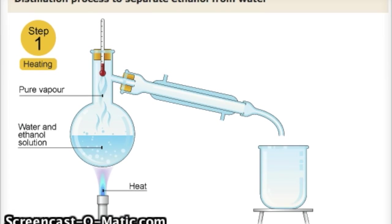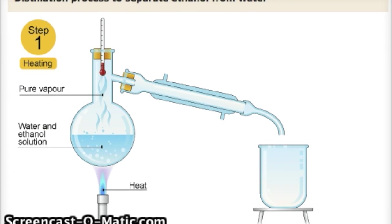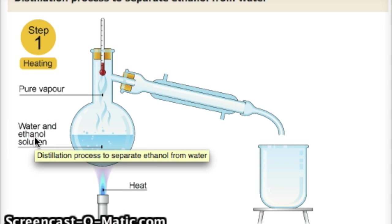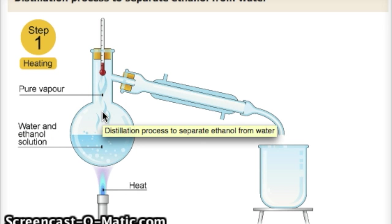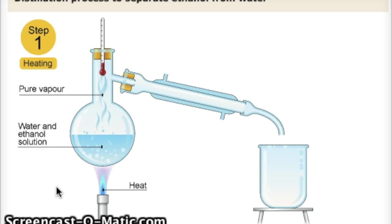If you remember back to Key Stage 3 when you learnt about distillation, there's a few processes. First of all, you start off with a mixture. Here we've got water and ethanol in a round bottom flask, and we heat it. When we heat liquids and reach their boiling point, they begin to boil and evaporate, turning into a gas.